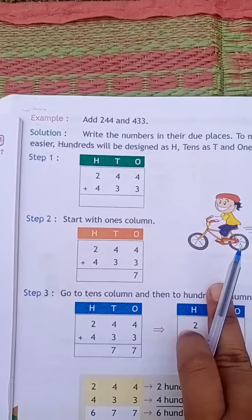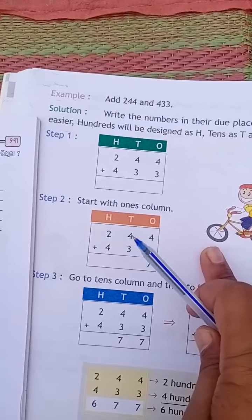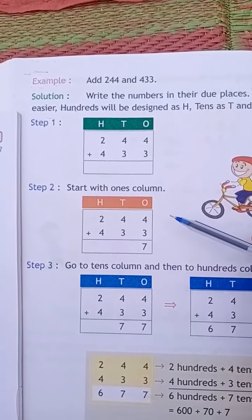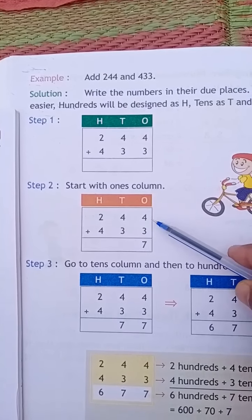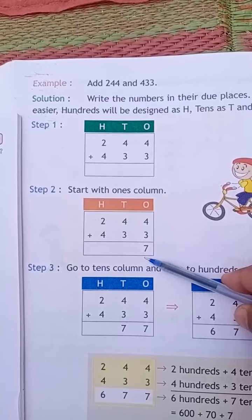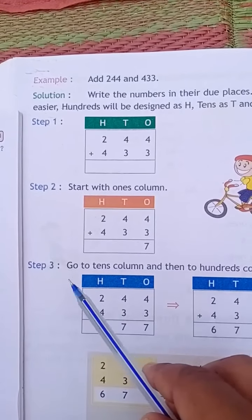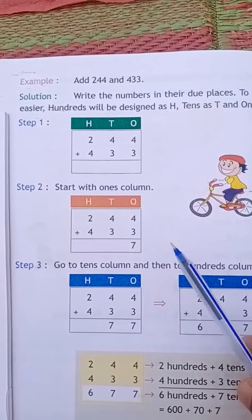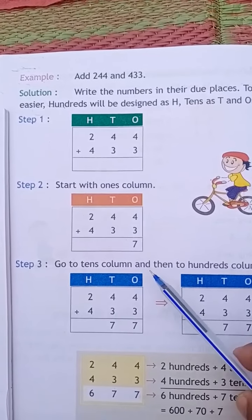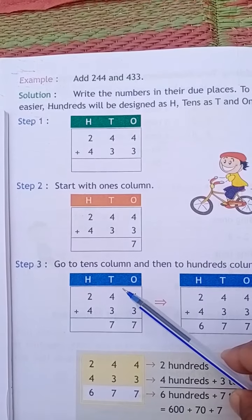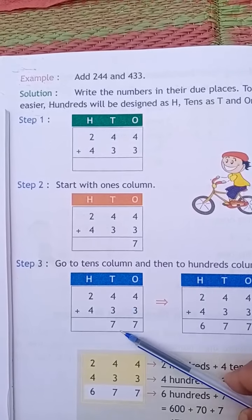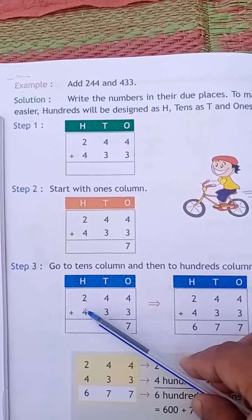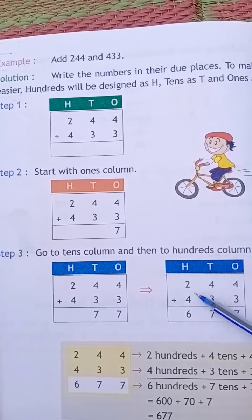Step 2: Start with ones column. First we will start with ones column. 4 plus 3 is equal to 7. Then go to tens column and then to hundreds column. Step 3: go to tens column. 4 plus 3 equals 7. Then 2 plus 4 is equal to 6.